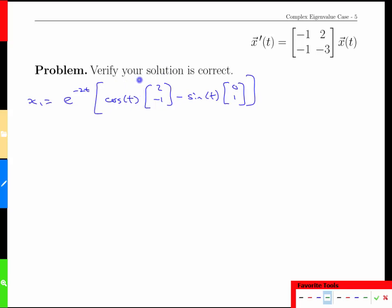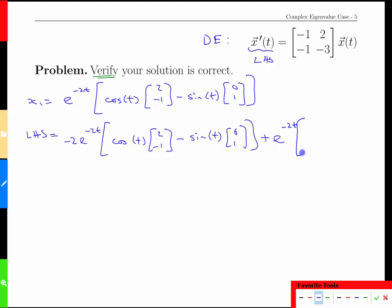Now because we've done something new here, it makes sense to verify that our solution is actually correct. This is going to be a little hairier than before because we're going to have product rule stuff happening, but it's certainly doable. The left hand side of our differential equation up here is simply the derivative. So the left hand side is going to equal -2e^(-2t) times all of the material inside. So we're going to use a product rule, we've taken the derivative of the first. And then we're going to add the first times the derivative of the second, which would be [-sin(t)[2; -1] - cos(t)[0; 1]].